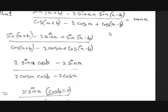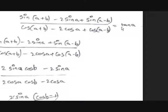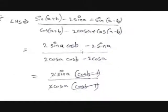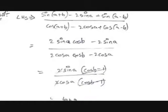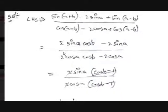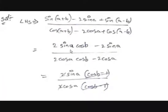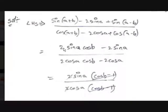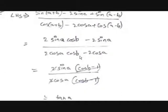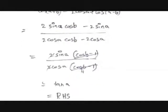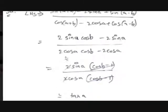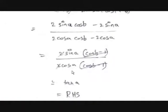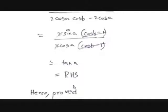Now, to get tan A, we take 2 sin A as a common factor from the numerator: 2 sin A(cos B − 1), and 2 cos A(cos B − 1) from the denominator. The (cos B − 1) terms cancel out, and the 2s cancel, leaving sin A / cos A, which equals tan A. It is proved.